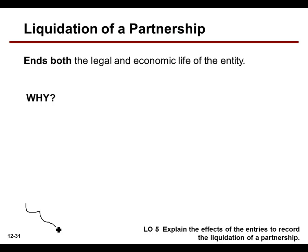This is the last section of the book. What happens when the partnership ends? When a partnership ends, or what's called liquidated — which means how fast can we get everything into cash — it ends both the legal and the economic life of the partnership. The question is why? What would prompt the partnership to be done?